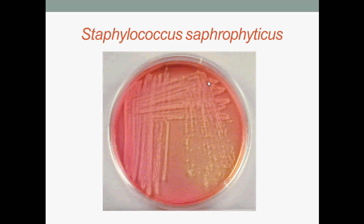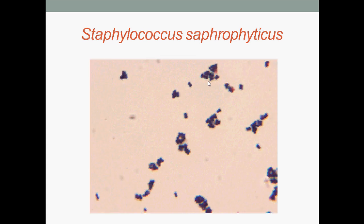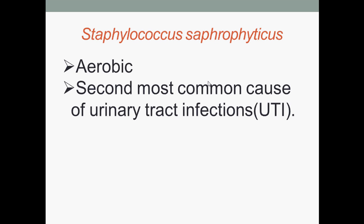Staphylococcus saprophyticus forms white colonies on mannitol salt agar. Under microscopic view, they are aerobic and are the second most common cause of urinary tract infections (UTI), behind Escherichia coli, which is the most common cause.